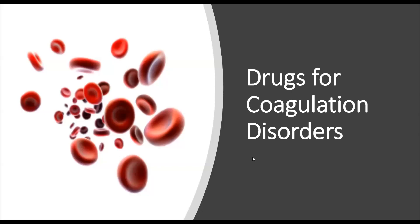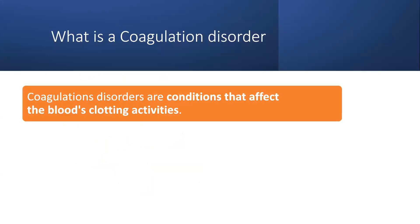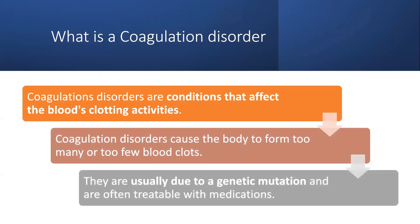Welcome to the topic: drugs for coagulation disorders. Coagulation disorders are conditions that affect the blood's clotting activities. They cause the body to form too many or too few blood clots, and they are usually due to a genetic mutation and are often treatable with medications.